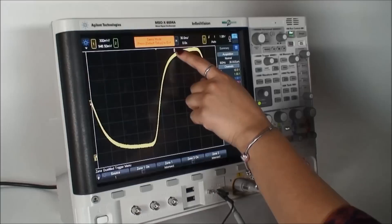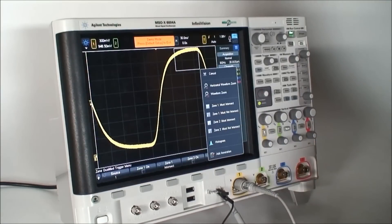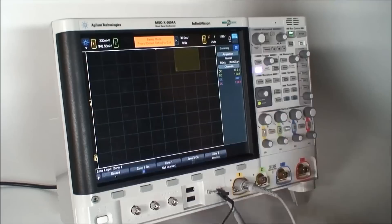The scope is now displaying waveforms that intersect the zone. Similarly, we can draw boxes on the waveforms that we wish to not see and select zone 1 must not intersect, and achieve the same result.